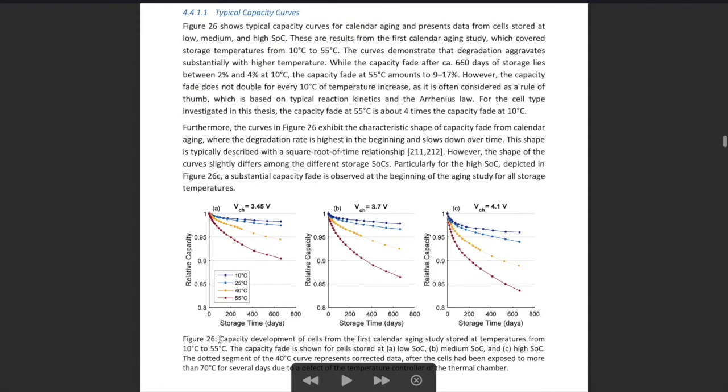The main point is the capacity development of a cell—the calendar aging depending on the state of charge. We see up here there are different voltages. The first voltage is very low, meaning maybe your battery's at 10% of charge.